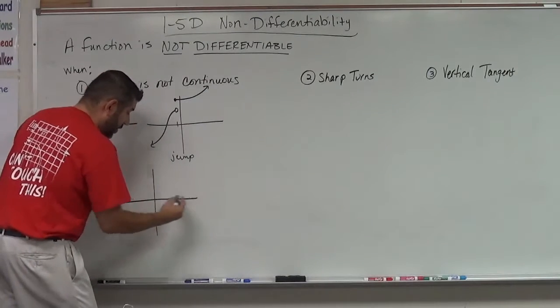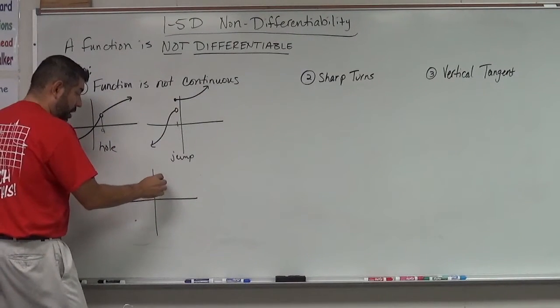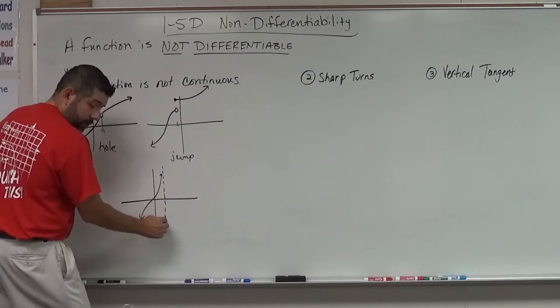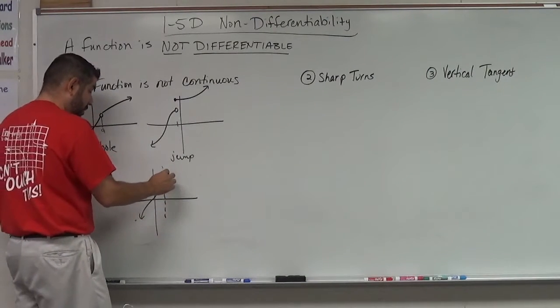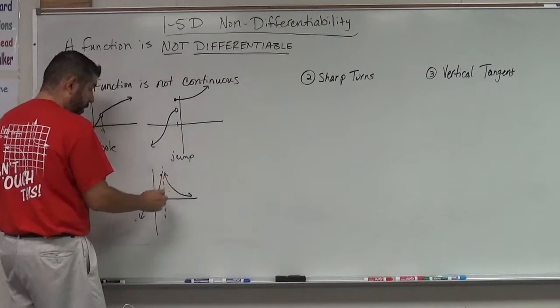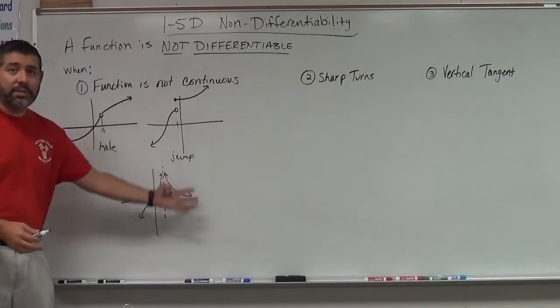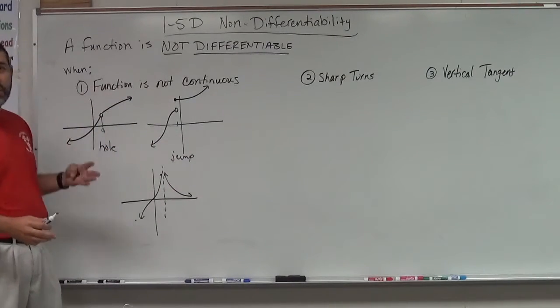And lastly, we also have a non-removable discontinuity that is a vertical asymptote. So if I have a vertical asymptote, it's also not differentiable at that vertical asymptote. So this is one case where it's not differentiable, wherever it's not continuous.